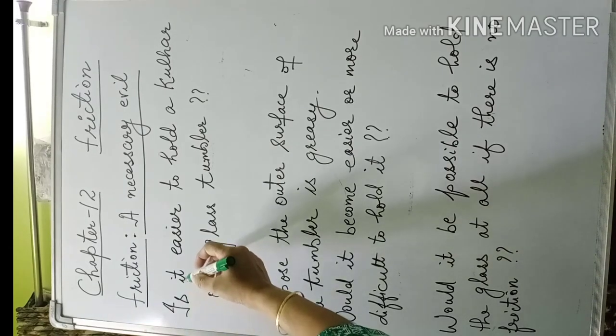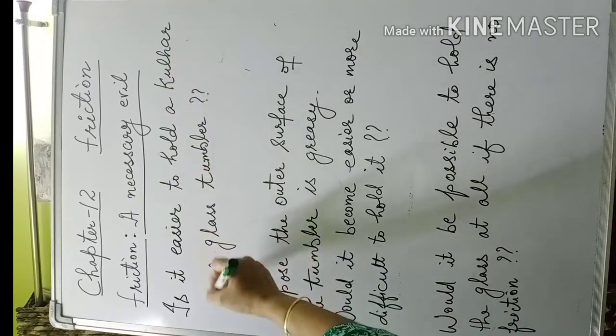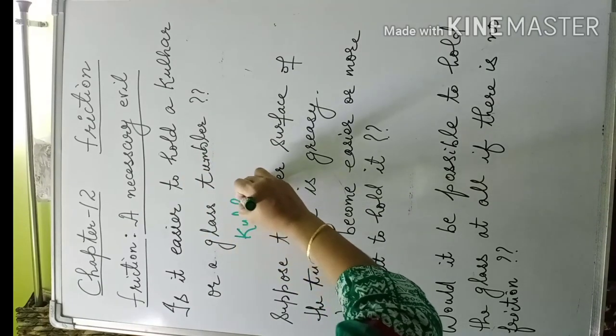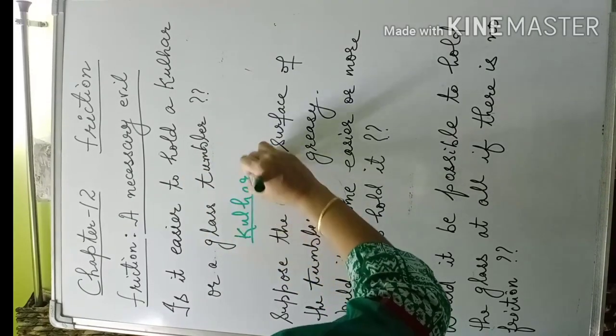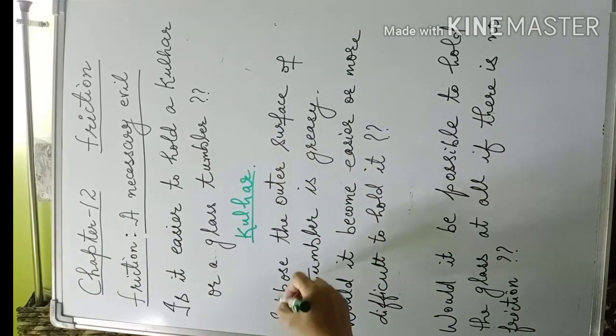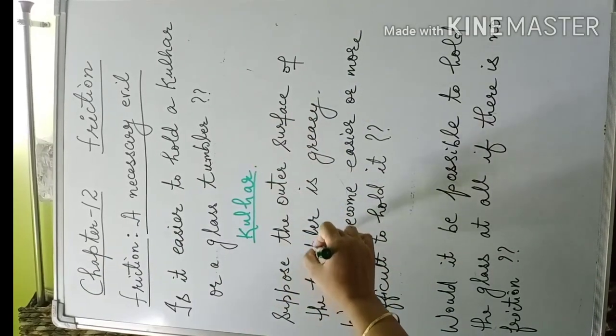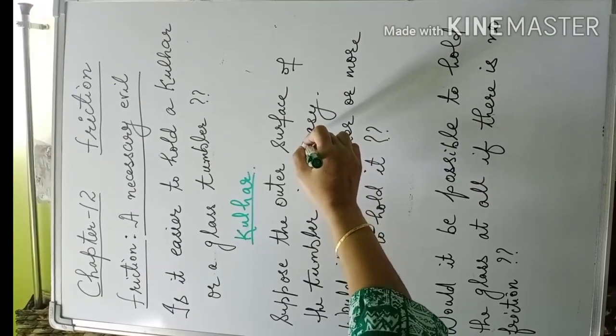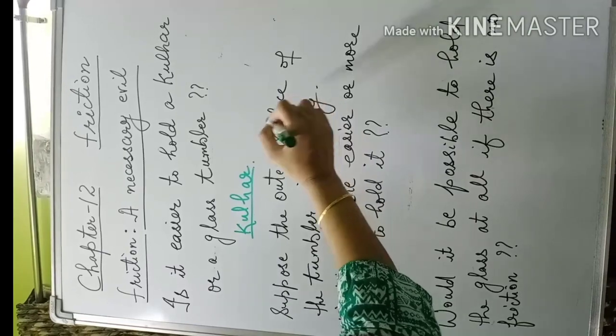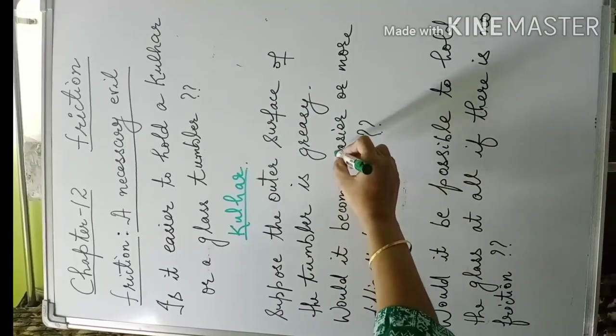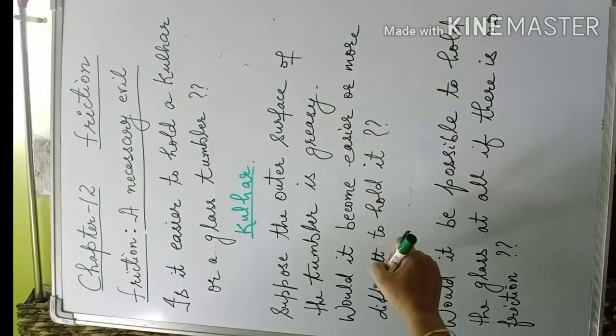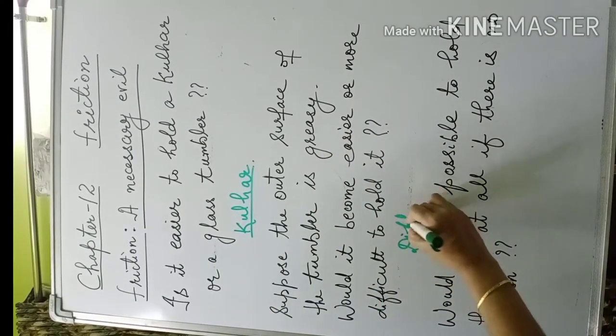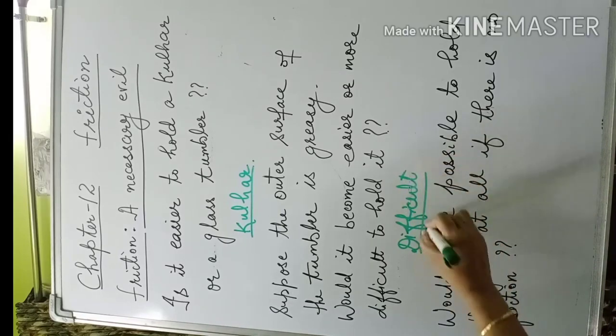Is it easier to hold a kullard or a glass tumbler? Of course it is easier to hold a kullard. Suppose the outer surface of the tumbler is greasy - it has a film of cooking oil on it. Would it become easier or more difficult to hold it? It will be difficult to hold it.